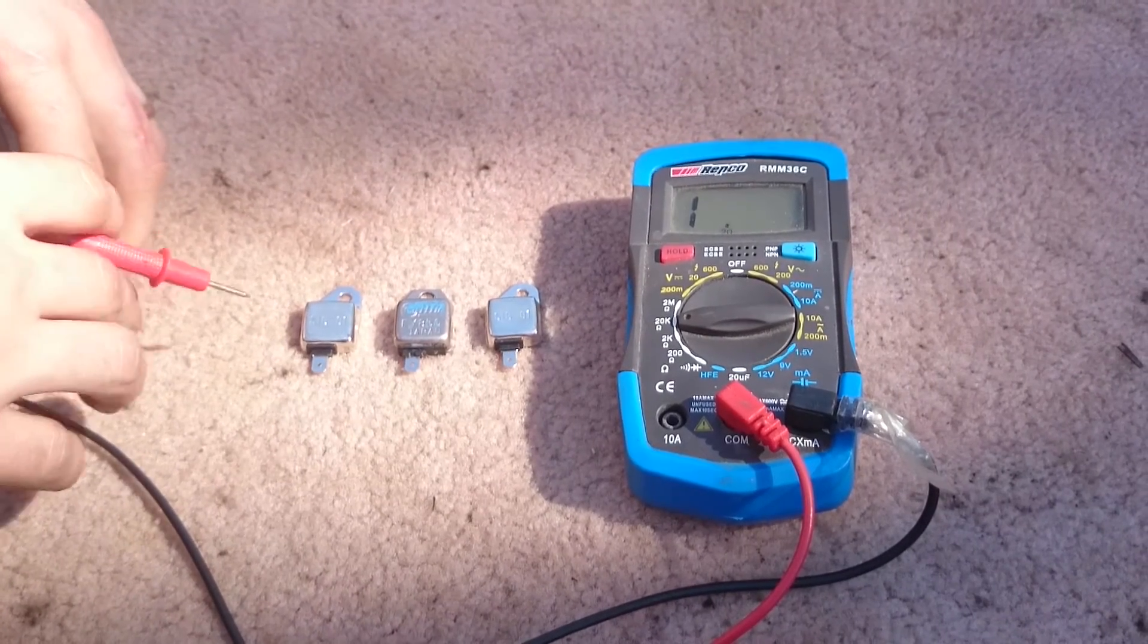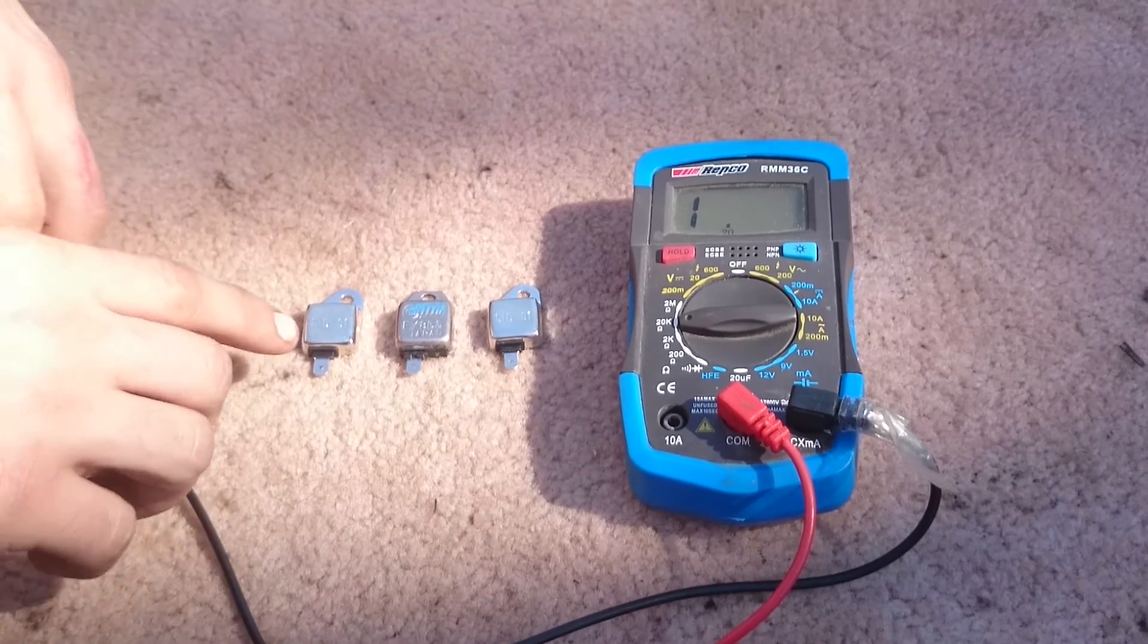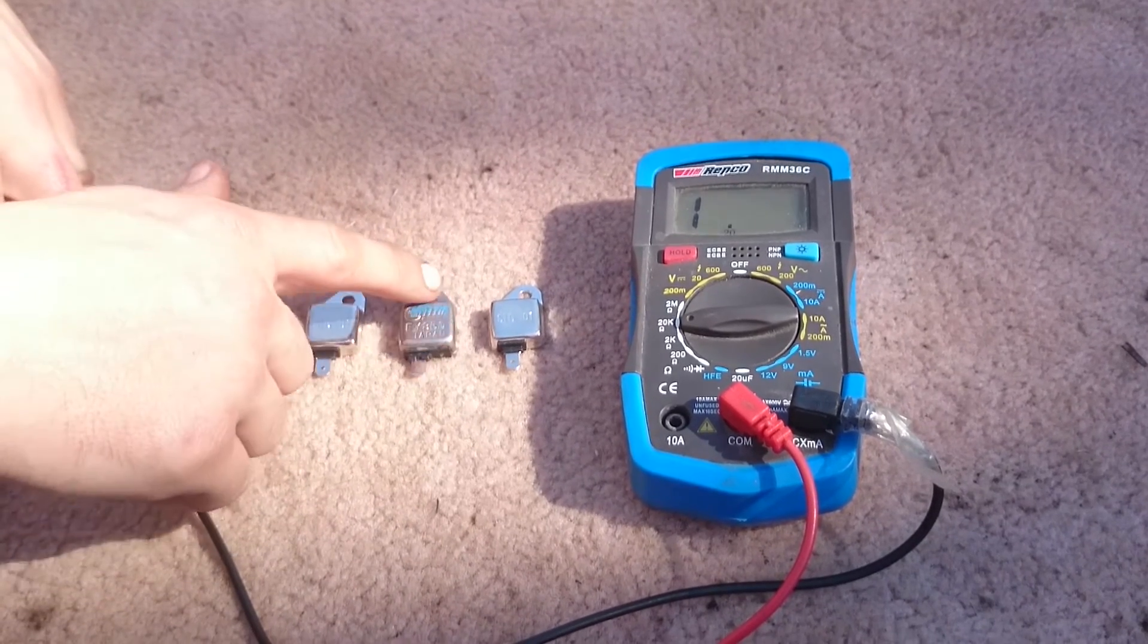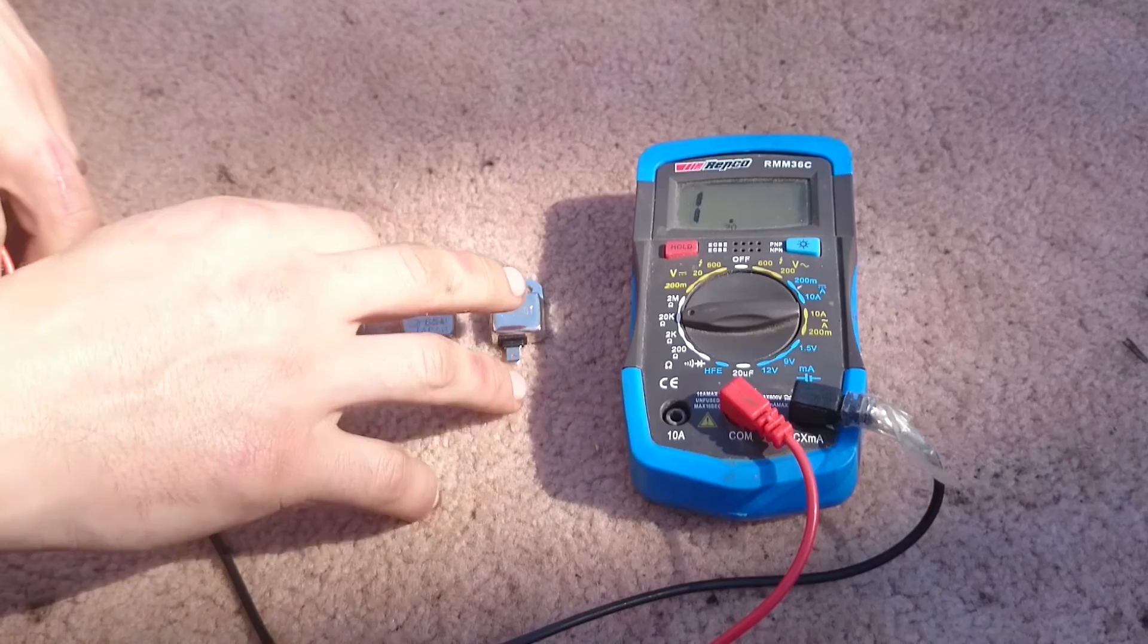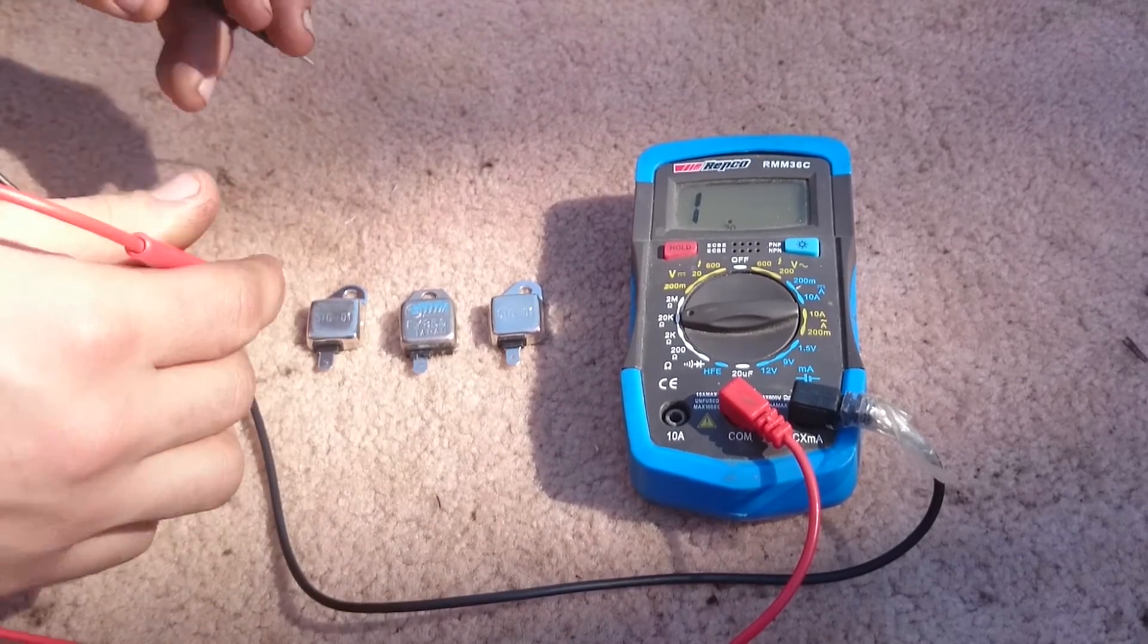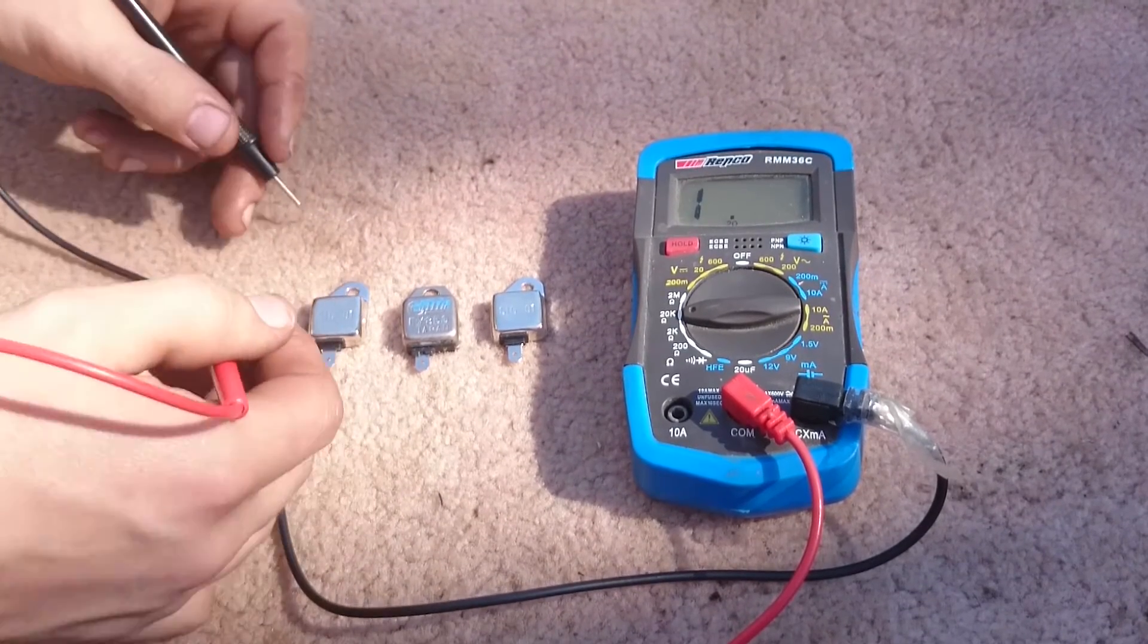We're going to start by testing these universal ignition modules. This one came off a Victor Power Torque engine that's been used, and these two are new universal modules that can go on any engine, a Briggs or Victor or anything you can find.